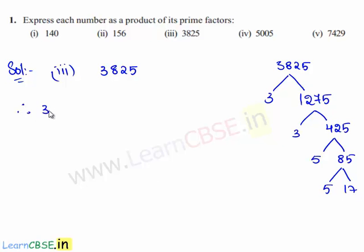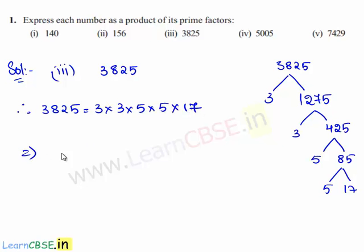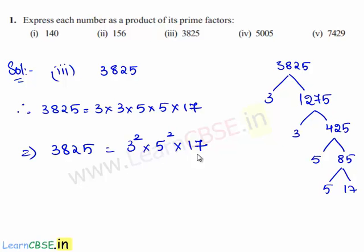Therefore, 3825 is expressed as 3 times 3 times 5 times 5 times 17, which implies 3825 is equal to 3 squared times 5 squared times 17. Hence, 3825 is expressed as a product of its prime factors.